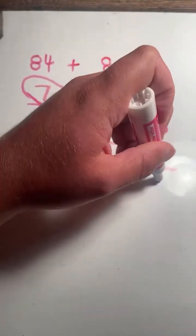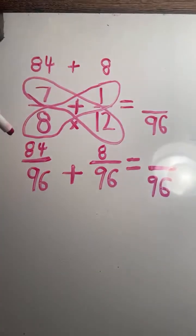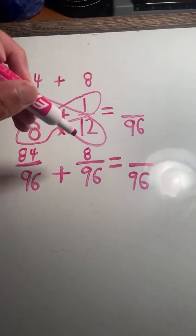Now that we have a common denominator, the denominator will stay the same. 84 plus 8 equals 92.